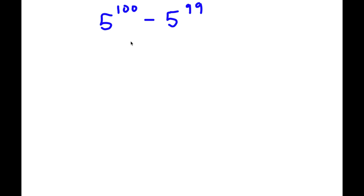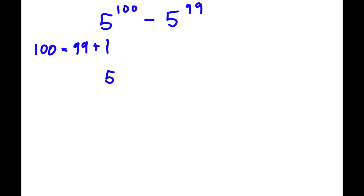So we have 5 to the power of 100 minus 5 to the power of 99. Now, 5 to the power of 100 — we could rewrite this. First off, 100 is equal to 99 plus 1. So I'm simply going to replace 100 with 99 plus 1, making this 5 to the power of 99 plus 1. Then we have minus 5 to the power of 99.